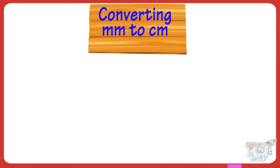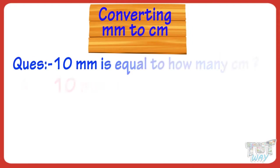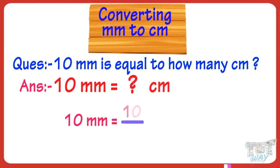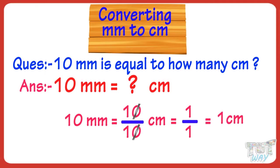Now let's learn converting millimeters to centimeters. 10 millimeters is equal to how many centimeters? 10 millimeters equals 10 divided by 10 centimeters. 10 divided by 10, we get 1. So 10 millimeters equals 1 centimeter.